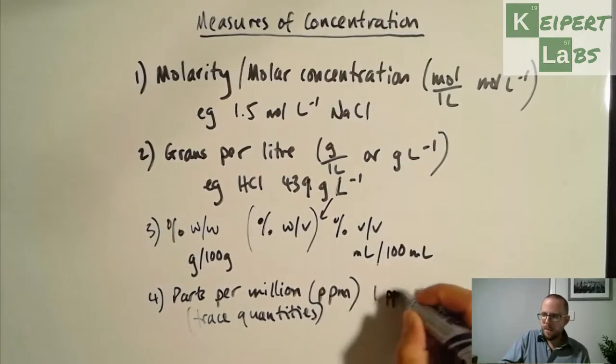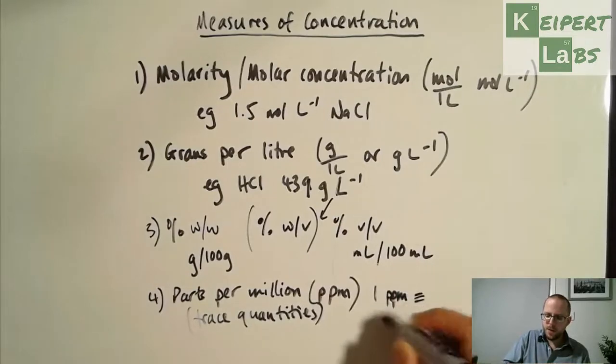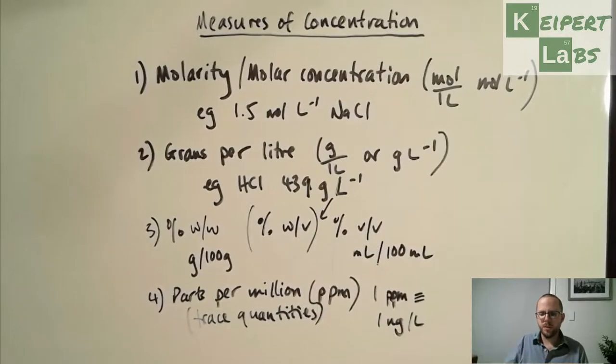And so one part per million is the same as one milligram per litre, in terms of this kind of level of concentration. And so if I have an amount that's got 12 parts per million, that's the same as 12 milligrams of that thing in every litre of solution, if it's water, for example.